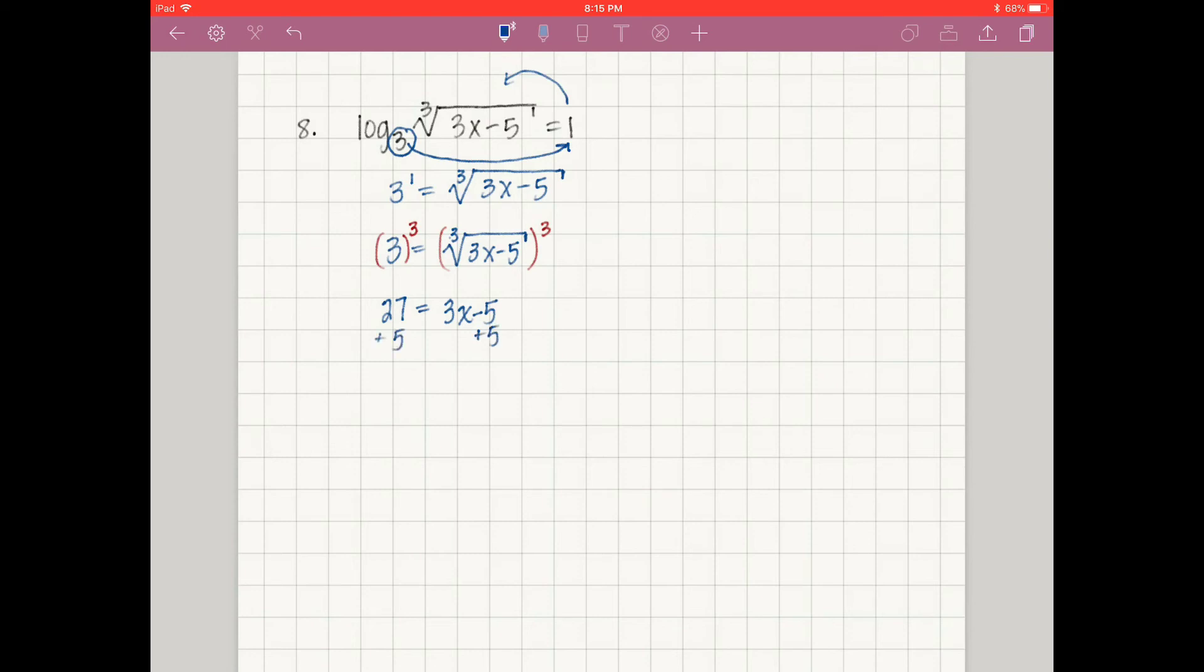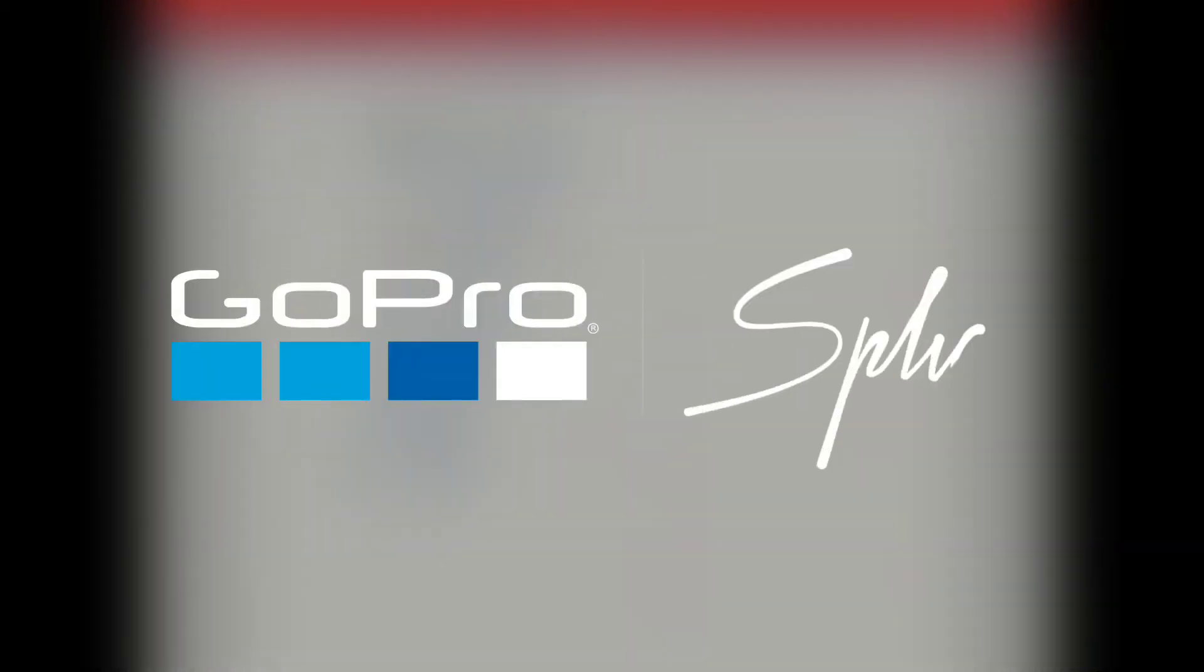I add 5 to both sides, then divide by 3, and x equals 32 over 3, which is just short of 11. If I take this number and plug it back in, 3 times 11-ish is 33 minus 5, which is positive. The cubed root of a positive number is positive.